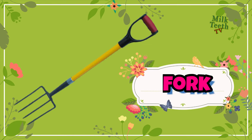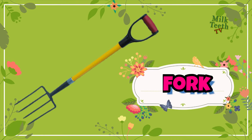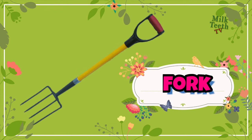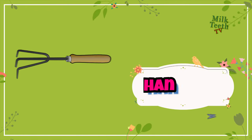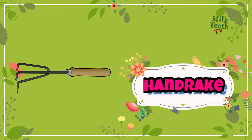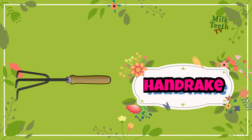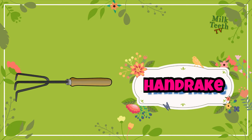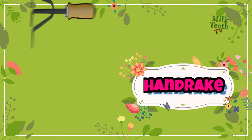also known as a digging fork. It is used to turn, dig, and also loosen the soil. This is a hand rake, or a small rake. It is used to clean the leaves and dead flowers from the garden beds.